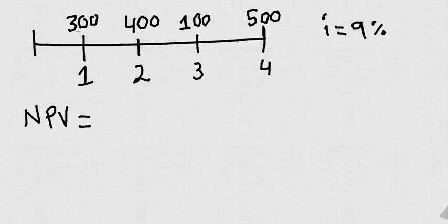Basically you want to figure out how much are all of these cash flows worth today. That is why we're going to do the present value of 300 plus the present value of 400 plus the present value of 100 plus the present value of 500.